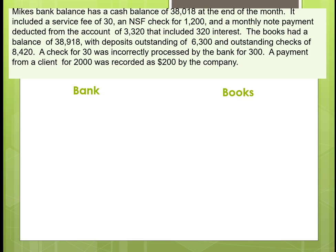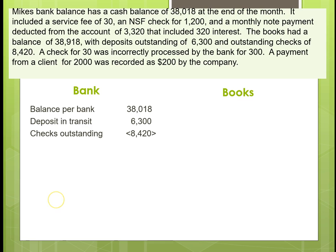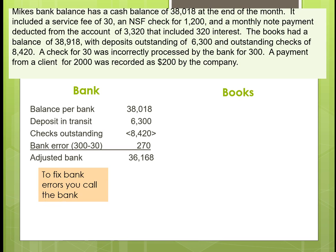We start with the bank balance of $38,018. We add deposits in transit and subtract checks outstanding. The bank check was incorrectly cleared so we add back $270, and we need to call the bank about that. This gives us an adjusted bank balance of $36,168, which is exactly what we need the books to show.